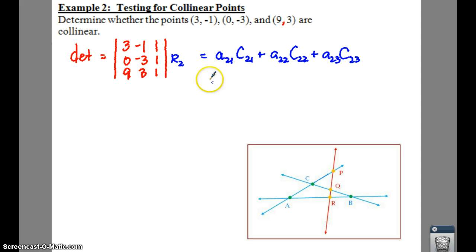And the good news is your element A21 here is a zero, so we don't have to worry about that. So all we really have to do is figure out what your cofactor of two, two, and two, three are. So let's find your cofactor of two, two, which we need to find your minor first. So if we do row two, column two, that means we're going to have three, one, and nine, one. So three minus nine gives you a negative six.